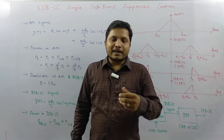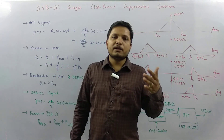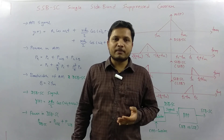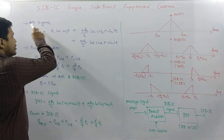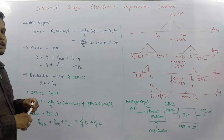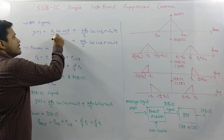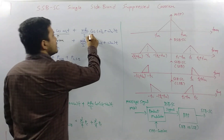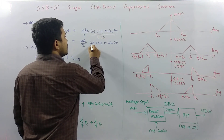Let us begin with the initial understanding from our previous sessions on amplitude modulation and DSB double sideband suppressed carrier, where I already explained the amplitude modulated signal. If you observe this AM signal, you can identify the carrier signal, the upper sideband, and the lower sideband.